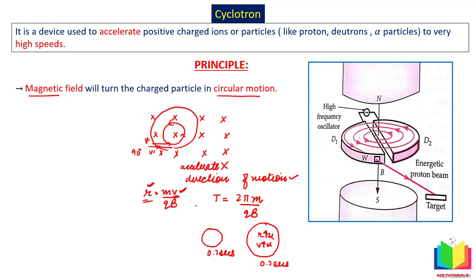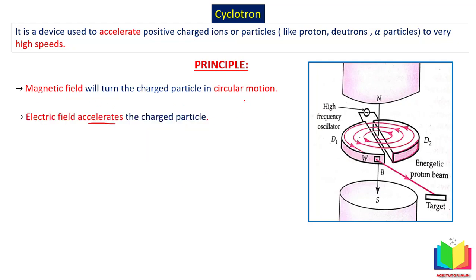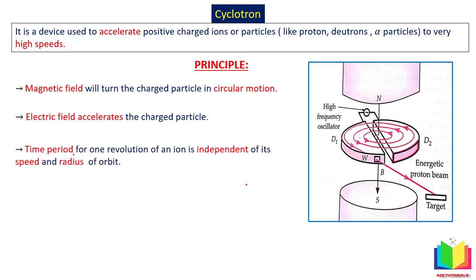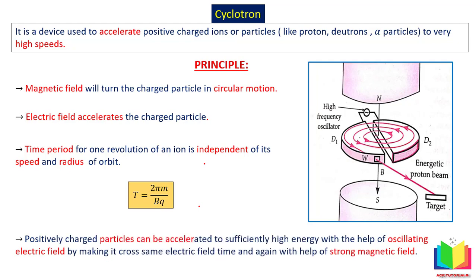These are important points to keep in mind. In a cyclotron, the magnetic field makes the charged particle move in circular motion, and the electric field accelerates it. Here we use AC voltage to provide the electric field. AC voltage means its cycle keeps changing — once positive, once negative. The time period of one revolution is independent of its speed and radius. The positively charged particles can be accelerated to sufficiently high speeds with the help of an oscillating electric field by making them cross the same electric field again and again, with the help of a strong magnetic field.